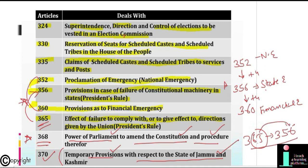For Article 365, if you reverse the last two digits — six and five — it becomes 356. These two articles are essentially opposite to each other: Article 356 deals with provisions in case of failure of constitutional machinery, while Article 365 deals with the effect of failure to comply with or give effect to directions given by the Union.